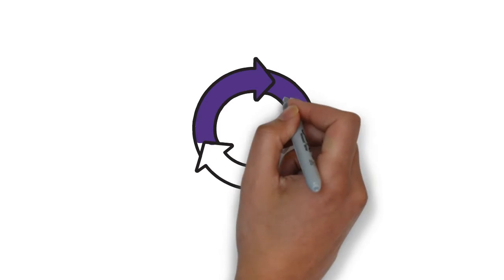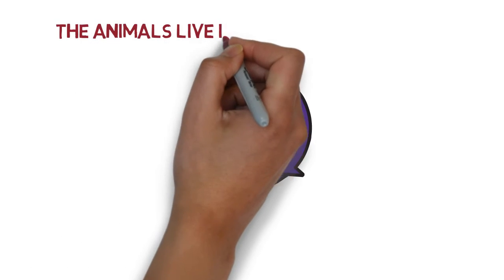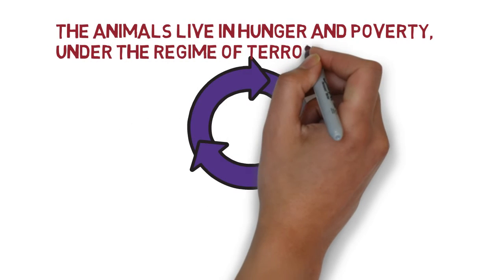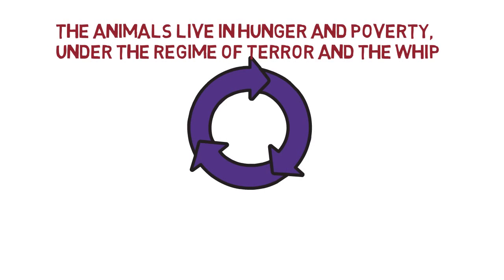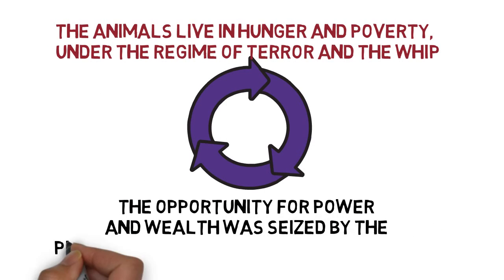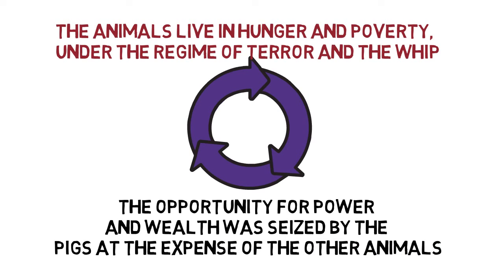And so the novel ends. Everything has returned to the state it was at the start. The animals live in hunger and poverty, under a regime of terror and the whip. The opportunity for power and wealth was seized by the pigs at the expense of the other animals, and perhaps it's fair to say that the betrayal of their own kind makes the position on Manor Farm even worse by chapter 10 than it was under Jones.